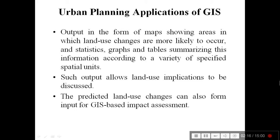Output in the form of maps showing areas in which land use changes are more likely to occur, along with statistics in the form of graphs and tables, summarizing this information according to a variety of spatial units that have been specified. Such output allows land use implications to be discussed. The predicted land use changes can also be a form of input for GIS-based impact assessment.